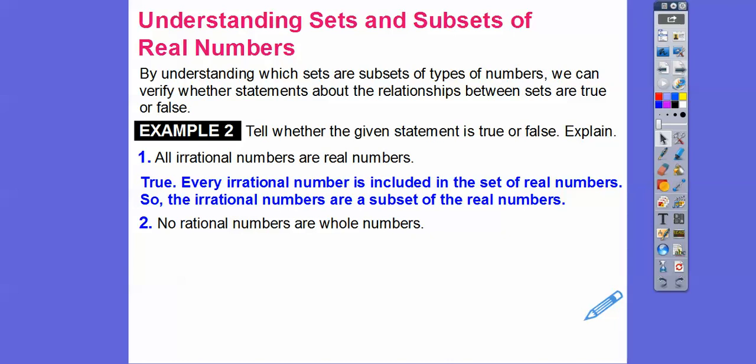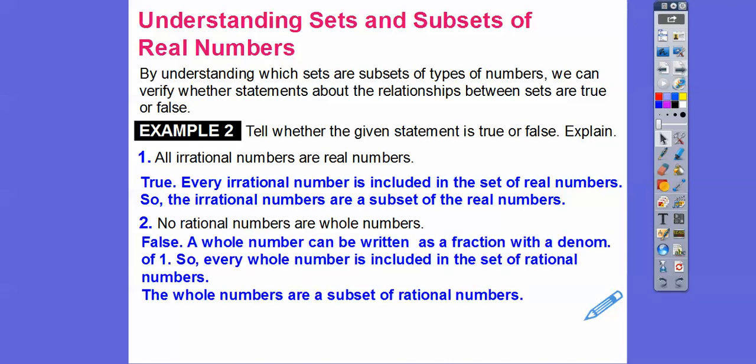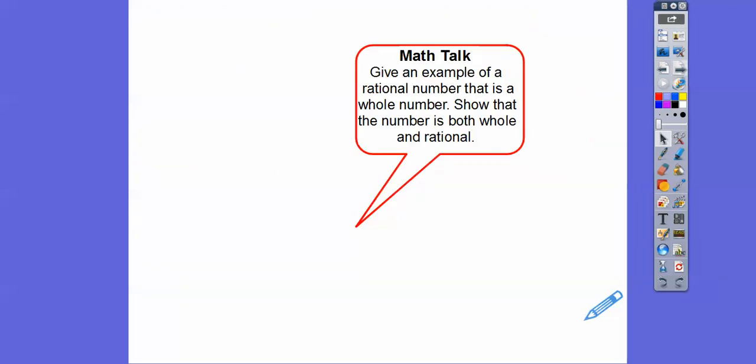No rational number is a whole number — well, that's false, because a whole number can be written as a fraction with a denominator of 1. Every whole number is included in the set of rational numbers. The whole numbers are a subset of rational numbers. Rational numbers are not a subset of whole numbers — not all rational numbers are whole numbers, but all whole numbers are rational numbers.